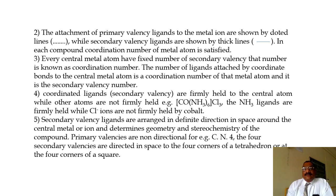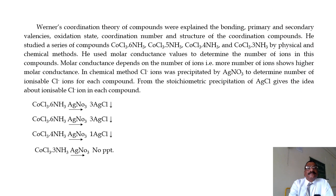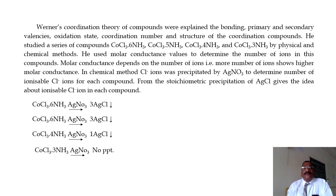For example, for a coordination number of 4, the four secondary valencies are directed in space toward the four corners of a tetrahedron or at the four corners of a square planar. Werner's coordination theory explained the bonding, primary and secondary valency, oxidation state, coordination number, and structure of coordination compounds. He studied a series of compounds: CoCl3·6NH3, CoCl3·5NH3, CoCl3·4NH3, and CoCl3·3NH3.